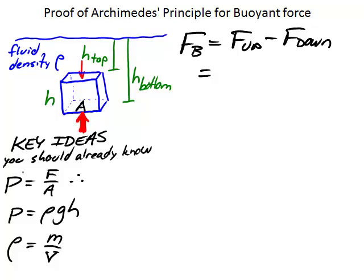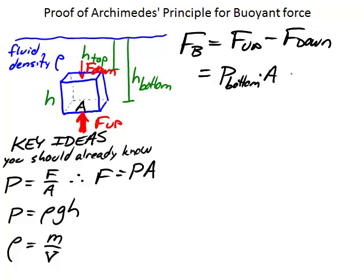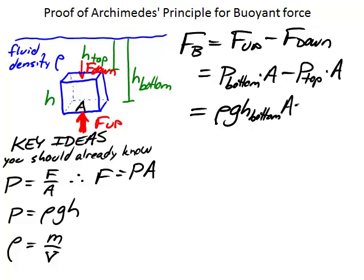What is the force pressing up and the force pressing down? We look at our equation for pressure: pressure is force divided by area, therefore force is pressure times area. So F-up is the pressure at the bottom times the area, and F-down is the pressure at the top times the area. We can replace those pressures with the hydrostatic equilibrium formula, so the buoyant force is rho*g*h-bottom*A minus rho*g*h-top*A. Notice that we have rho*g*A in both terms.